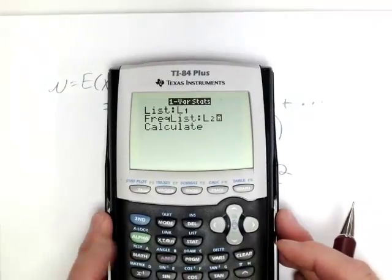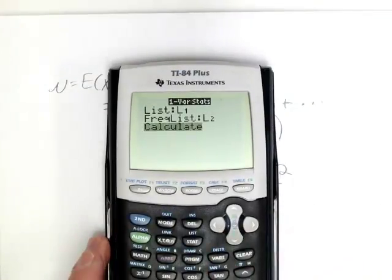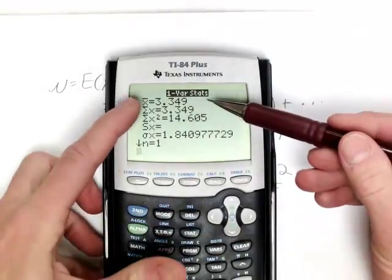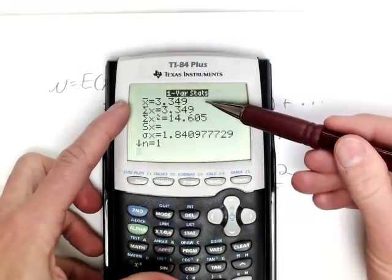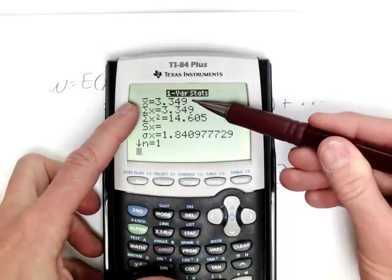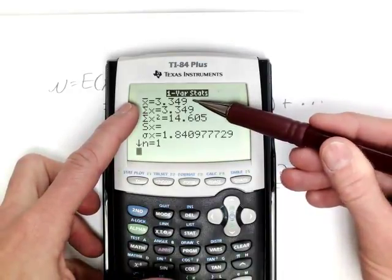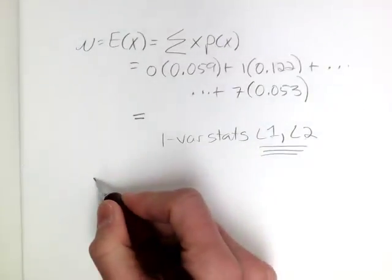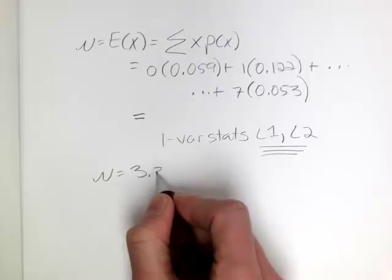Going back to the calculator, I'm going to press calculate. And even though the notation is x bar, this is really mu, because we're talking about a probability distribution. So the mean is 3.349. So mu for this problem is 3.349.